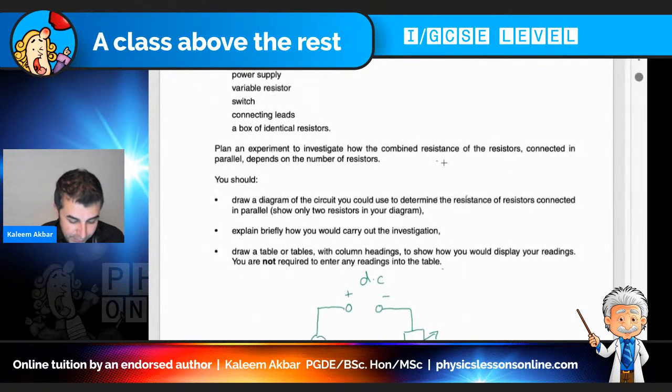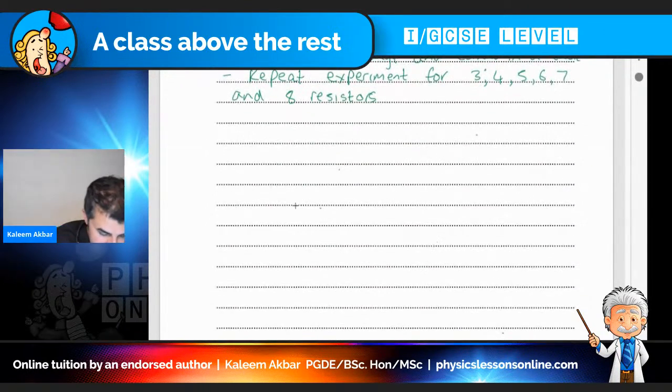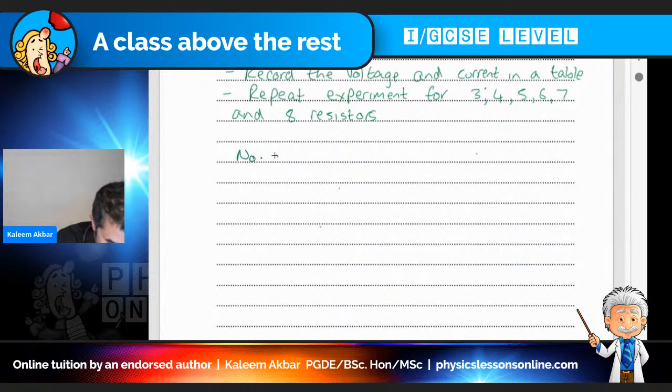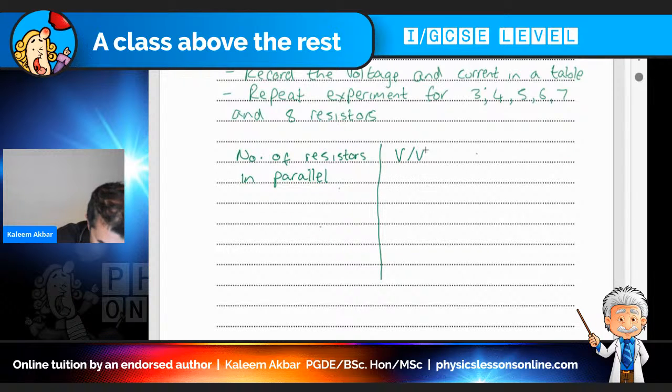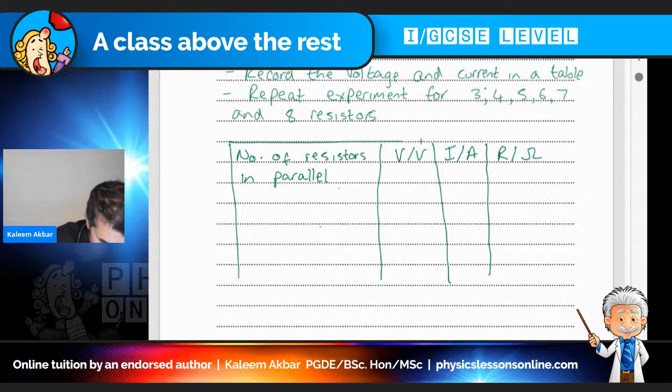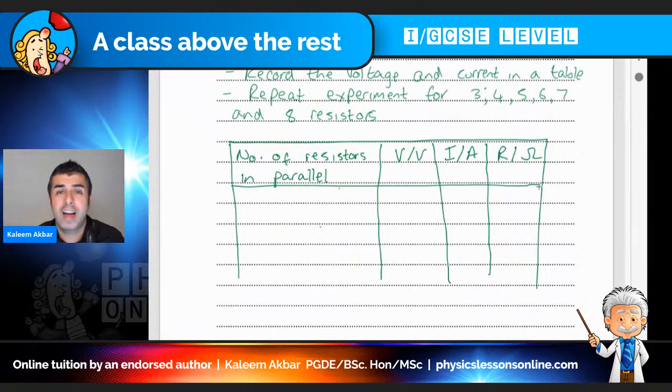So what have I done? Explain briefly how I'm going to carry out the investigation. I've done that. I've drawn the diagram and then last but not least draw a table or tables with column headings to show how you would display your readings. So I'm going to now do that. So number of resistors in parallel, voltage in volts, current in amps and then we've got resistance in ohms. And again I would totally encourage you to use a ruler. And remember you are not required to put in any results at all. You can't. You've not actually done any experiment.